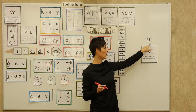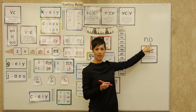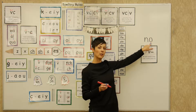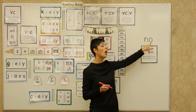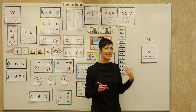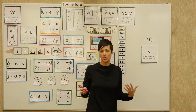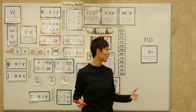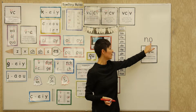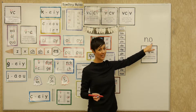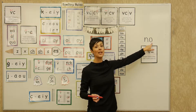So I show them a word like 'no,' and I tell them this word says 'no,' and I want you to notice that the O says O. It doesn't say O just because I wanted it to or just because I like the letter O. This letter O, you might notice, doesn't have anything after it. It's what we call an open vowel.